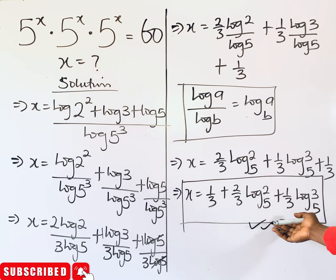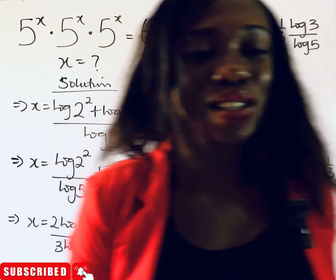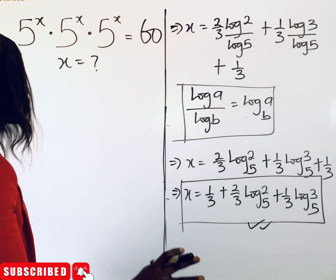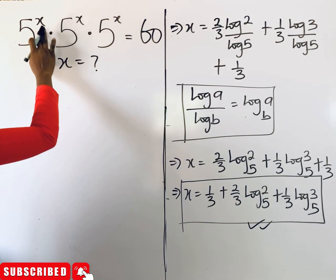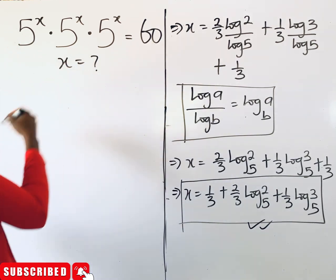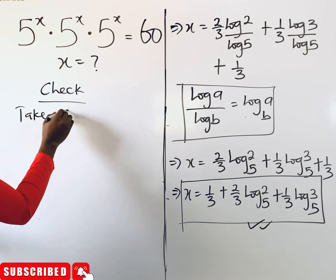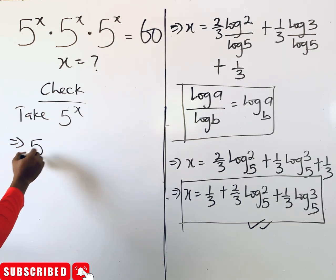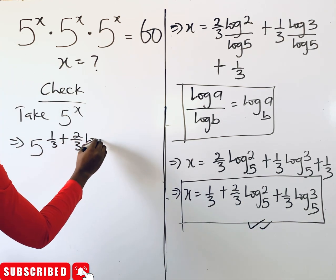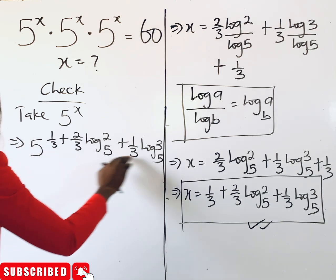Now let's plug this value of x into the left side of the equation to verify it gives 60. To check, since 5^x is repeated three times multiplied together, we first evaluate 5^x by substituting x = 1/3 + (2/3)·log₅(2) + (1/3)·log₅(3).